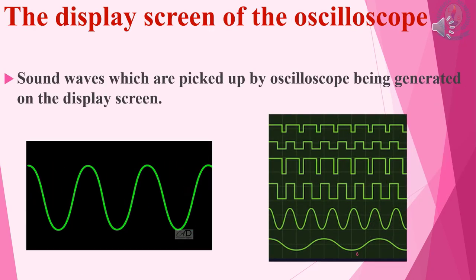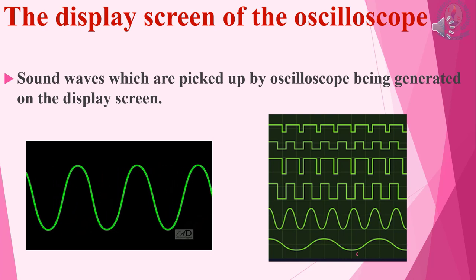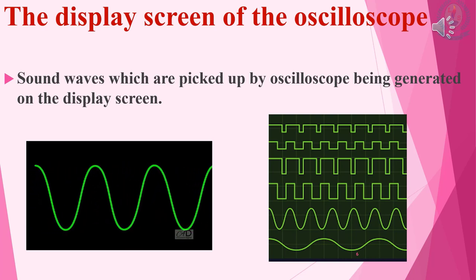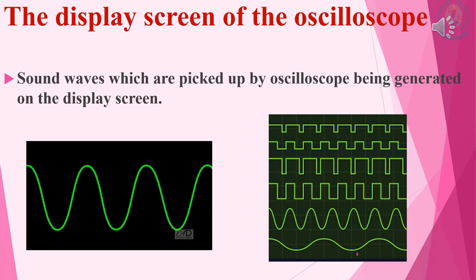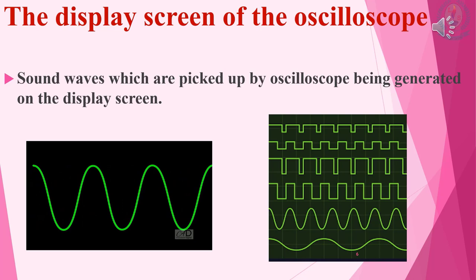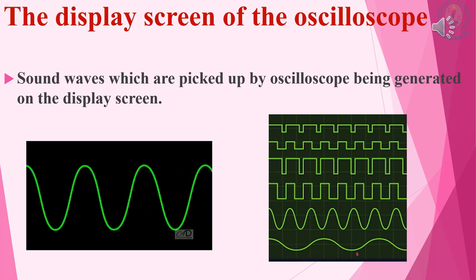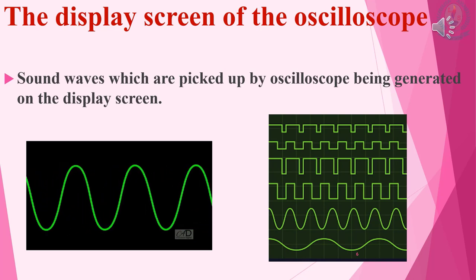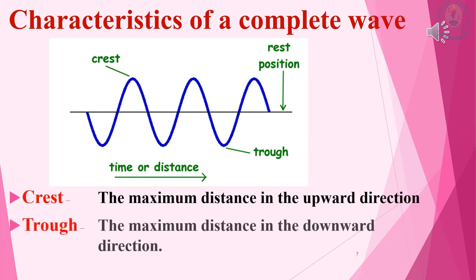What do we actually see on the display screen of the cathode ray oscilloscope? When the cathode ray oscilloscope picks up sound waves, we will see waves being generated on the display screen. Before making use of the information displayed on the screen, we should have an idea about a few concepts about waves. In this slide you can see a wave.